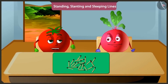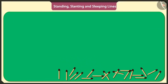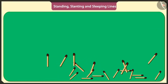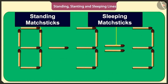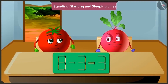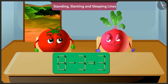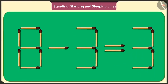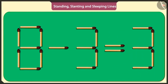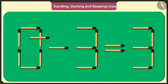Let's play a fun game. I will arrange these matchsticks in standing and sleeping lines to make a puzzle. Hey, but this puzzle is wrong. If we subtract three from eight, then we get five. This is the puzzle. You have to remove any one matchstick and place it again in such a way that it solves the puzzle. If I lift this sleeping stick in the middle of number eight and place it above the symbol of subtraction like this, then the puzzle will be solved.